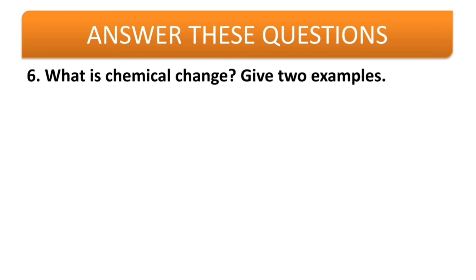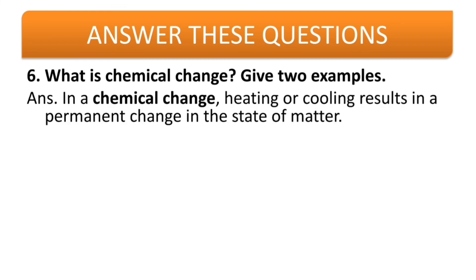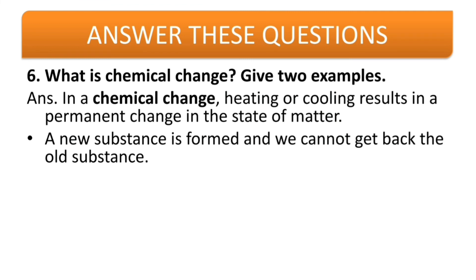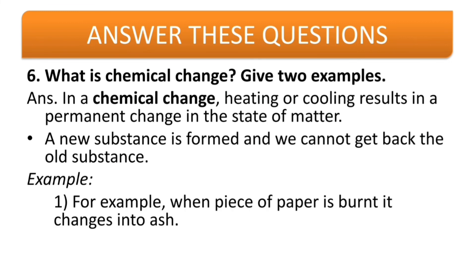Sixth question: what is a chemical change? Give two examples. In a chemical change, heating or cooling results in a permanent change in the state of matter. A new substance is formed and we cannot get back the old substance — after forming the new substance, you cannot reverse it. For example, when a piece of paper is burnt, it changes into ash — you cannot change ash back into paper. Second example: milk turning into curd is also a chemical change; you cannot turn curd back into milk.